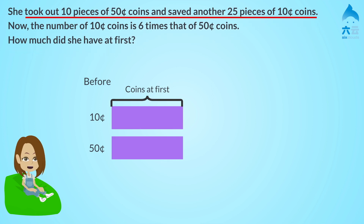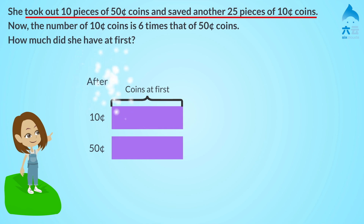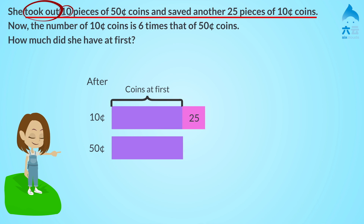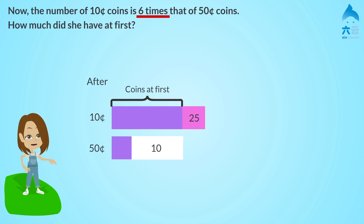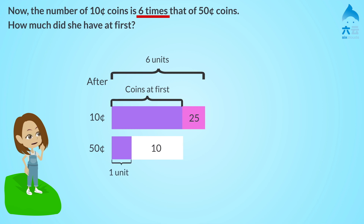How would you draw the model diagram to represent this information? How can you represent this information on the model diagram? I can say this amount is 6 units and this is 1 unit.